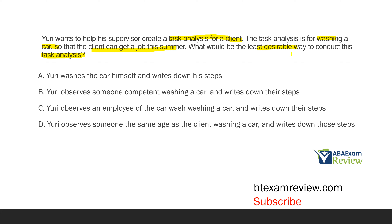What we don't want to do is D — Yuri observes someone the same age as the client washing a car. Why not? We don't know that person's skill level. What if they're terrible at washing a car or don't do a good job? We need somebody who can actually do the skill appropriately in order to gather the steps to create a task analysis. So the worst way to do the task analysis is to look at someone at the same age or developmental level. You want somebody who's very proficient in whatever behavior or task you are trying to analyze.